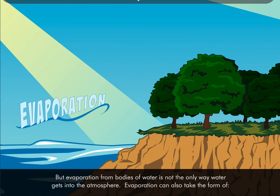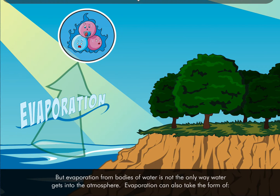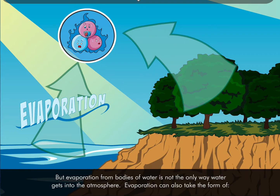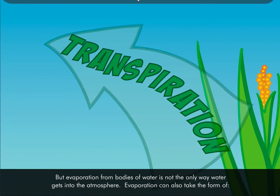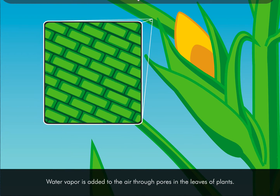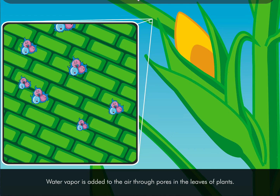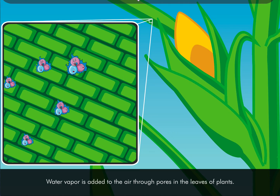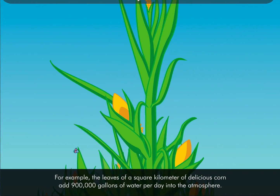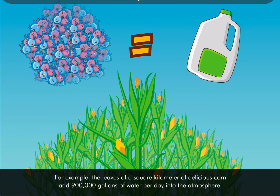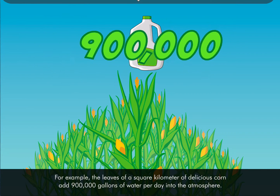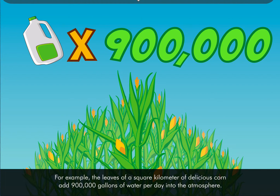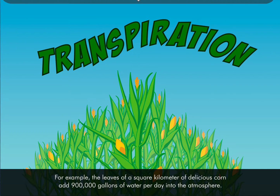Evaporation from bodies of water is not the only way water gets into the atmosphere. Evaporation can also take the form of transpiration. Water vapor enters the air through pores in the leaves of plants. For example, the leaves of a square kilometer of corn add 900,000 gallons of water per day into the atmosphere. This process is called transpiration.